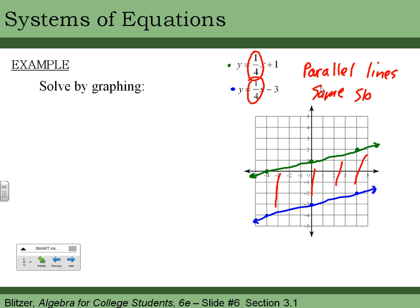Their y-intercepts will be different, but their slopes will be the same. Well, they're never going to intersect, so that means that this is no solution. There isn't a solution to this problem because they're not going to intersect.